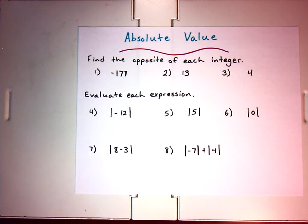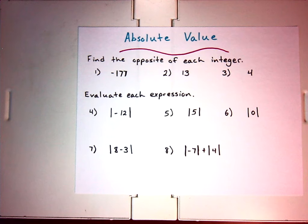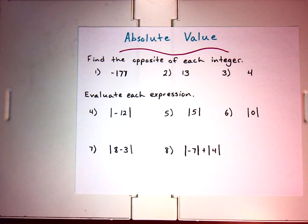We also have a term here talking about opposites. The opposite of a negative number is that number in its positive form. And the opposite of a positive number is that number in its negative form. Let's look at some examples for that.